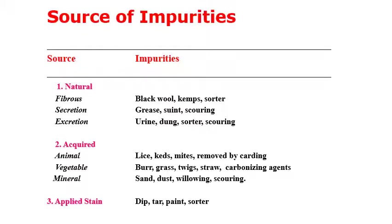Looking at the sources of impurities in more detail: natural impurities can be fibrous — such as black wool or kemp — which get mixed with pure wool. Then there are secretions: grease from the sudoriferous gland and soot mainly from the sweat gland. Excretions such as urine, dung, and scouring residues can also be present as natural impurities.